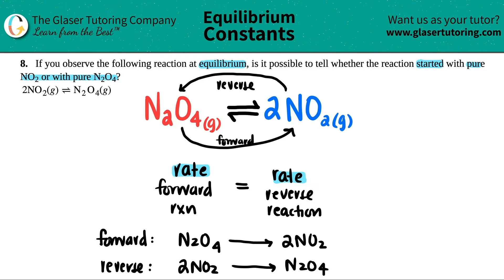Now these are at equilibrium. The question said if you observe the following reaction at equilibrium, so that means both of this is happening at the same time. The forward reaction, N2O4 is turning into 2NO2, and the reverse reaction is happening as well, the 2NO2 is turning into N2O4.